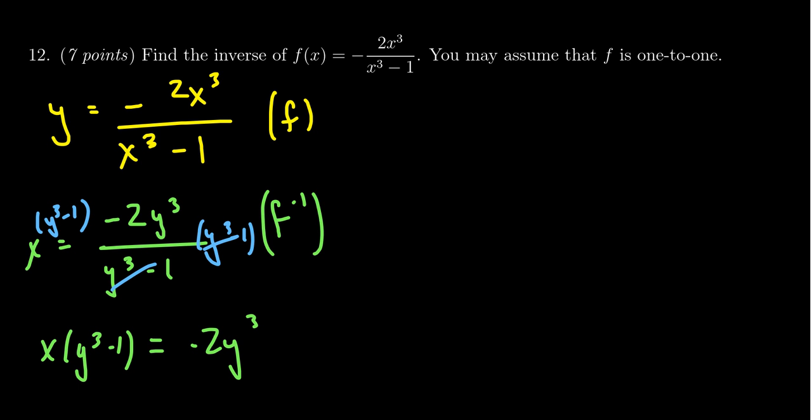We're then going to free up the y because, again, we want to get the y cubes together. The y is now trapped inside the parentheses, so we have to distribute the x so that we can drop the parentheses from consideration. This gives us xy cubed minus x is equal to negative 2y cubed.